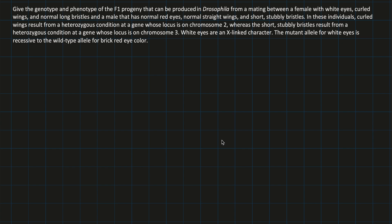In this example, we're going to do a trihybrid cross in Drosophila. We're going to use both autosomal and sex-linked genes. Let's start reading the description that the problem is giving us.